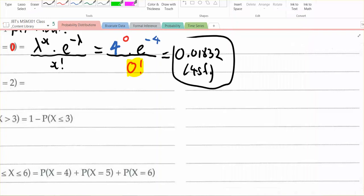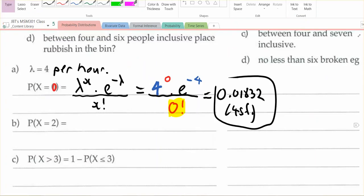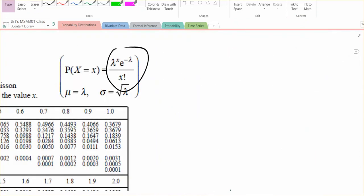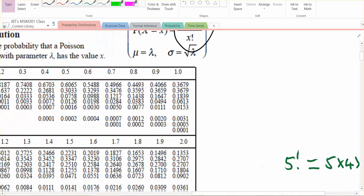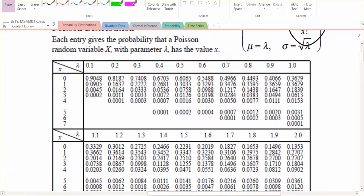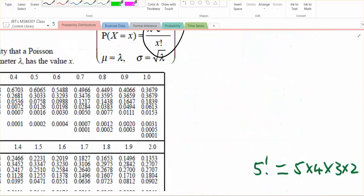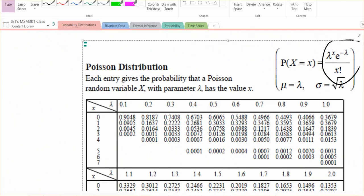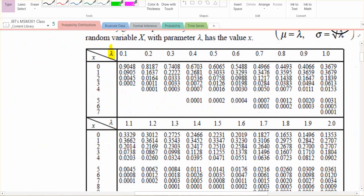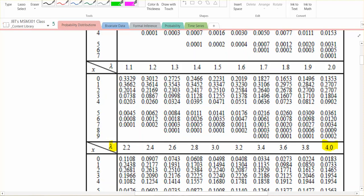Which is the same as if I'd looked up on my tables, using lambda of 4 and x of 0, 0 factorial, and here it is, so lambda is the number along the top, so there's my lambda, so I'm looking for 4.0, so lambda of 4, and then x value of 0, and see 0.0183, and that's the same answer as we got using the formula.